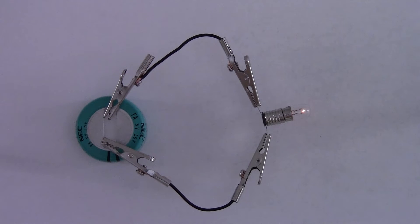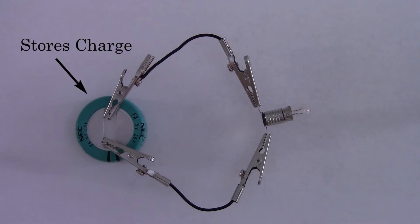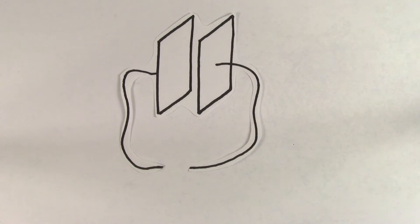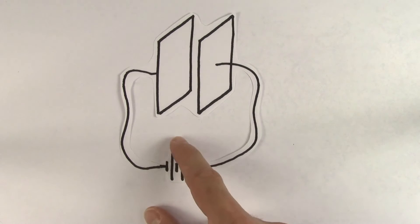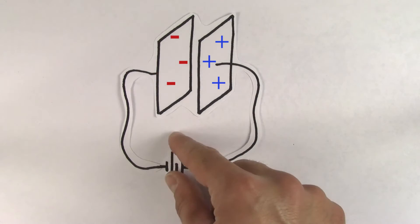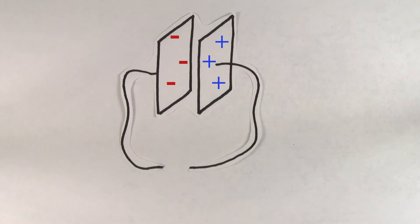The reason this happens is because when a capacitor is charged up, it not only stores charge, but it stores energy as well. When we hooked up the capacitor to the battery, the charges got separated. These separated charges want to come back together when given the chance, because opposites attract.